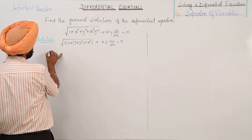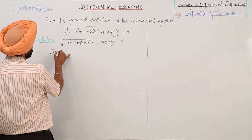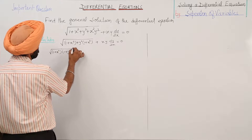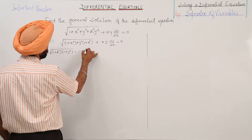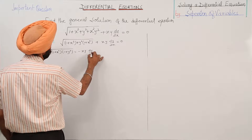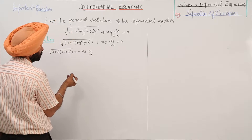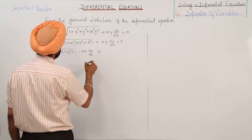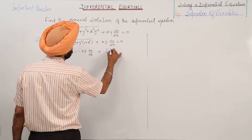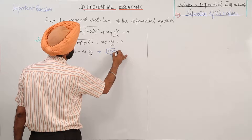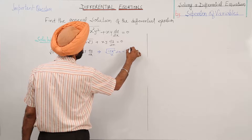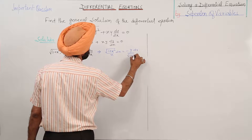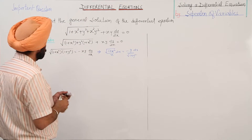This becomes 1 plus x square times 1 plus y square is equal to negative of xy times dy by dx. This implies square root of 1 plus x square upon x with dx is equal to negative of y dy upon square root of 1 plus y square.